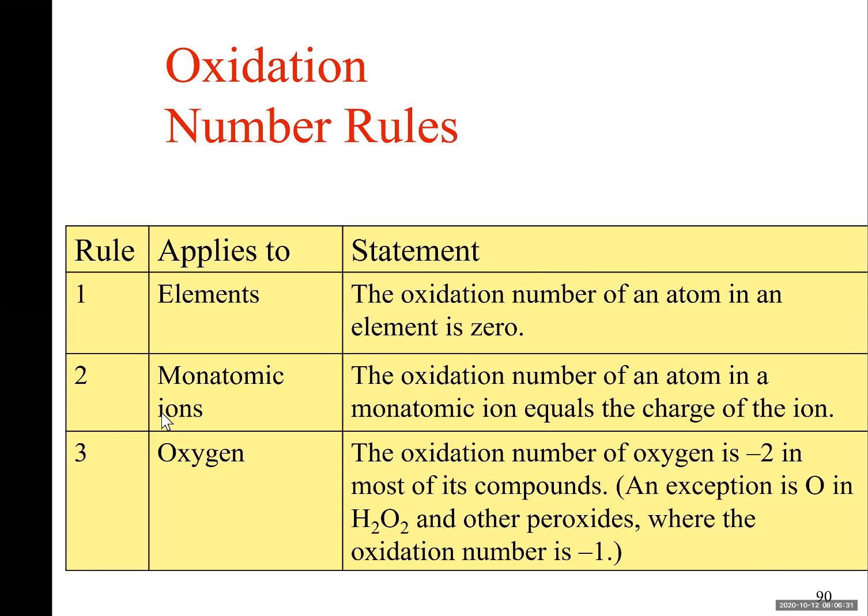You can identify the oxidation number of certain elements and then look to see whether the oxidation number changed before and after a reaction. Based on the change of oxidation number, we can decide whether a particular ion or element is oxidized or reduced.